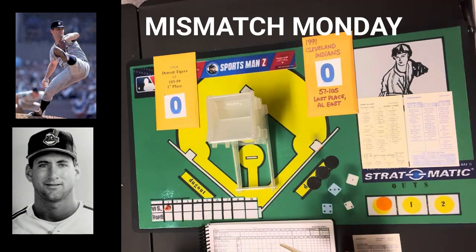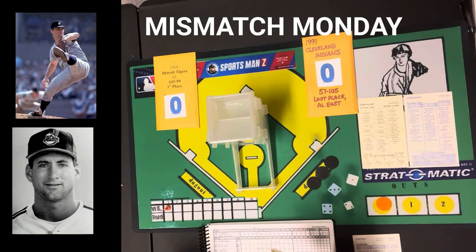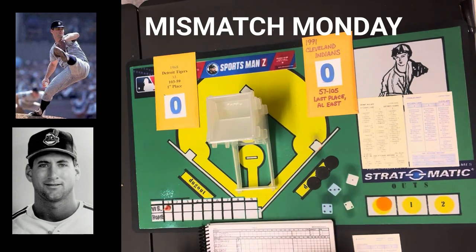The visiting team will be the '68 Tigers, lining up as: Mickey Stanley in center field leading off, Al Kaline in right batting second, Norm Cash at first base batting third, Willie Horton as DH batting cleanup, Bill Freehan catching and batting fifth, Dick McAuliffe at second batting sixth, Jim Northrup in left batting seventh, Don Wert at third batting eighth, and Dick Tracewski at short batting ninth. They will face Charles Nagy, who in 1991 was 10-15 with a 4.13 ERA.